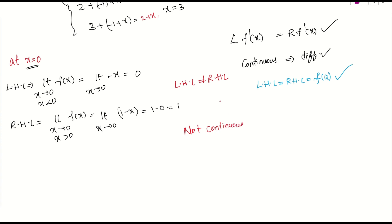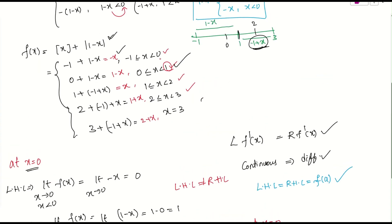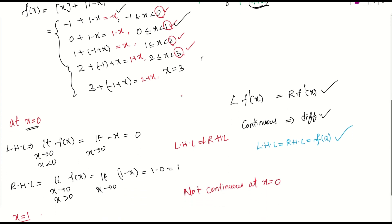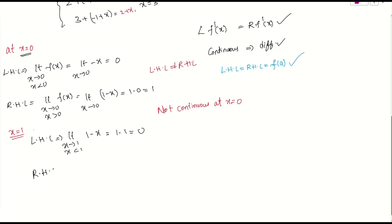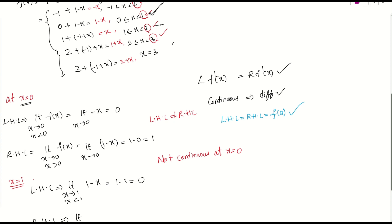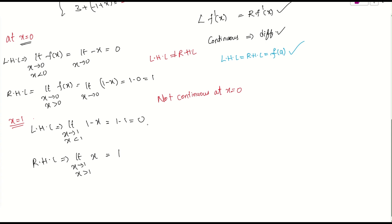At x = 1: LHL = limit as x→1⁻ of (1-x) = 1-1 = 0. RHL = limit as x→1⁺ of x = 1. Since LHL ≠ RHL, we can say the function is not continuous at x = 1 either.